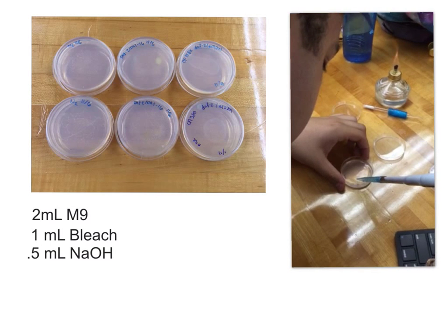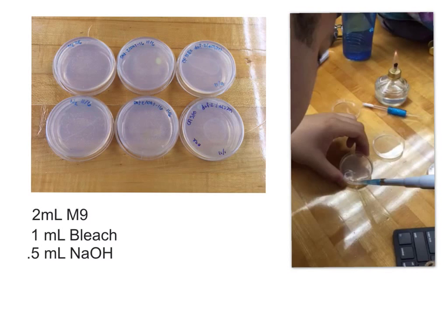We transferred the contents of each set of plates to one of three tubes, which was centrifuged at 2,000 RPM for two minutes. The resulting pellets were then washed with M9 buffer two more times to make sure they were free of worm tissue and leftover bleach solution.